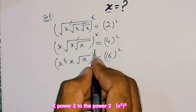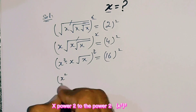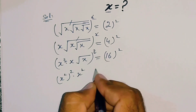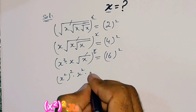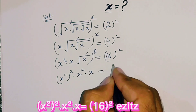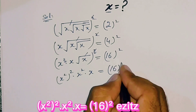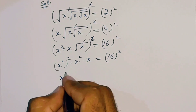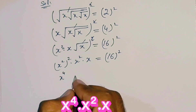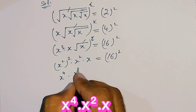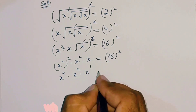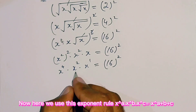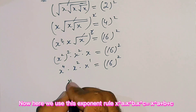x power 2, power 2 — this x power 2, this square will be cancelled, leaving here x. On the right side, 16 power 2. So this gives us x power 4, times x power 2, times x power 1, which is equal to 16 power 2.